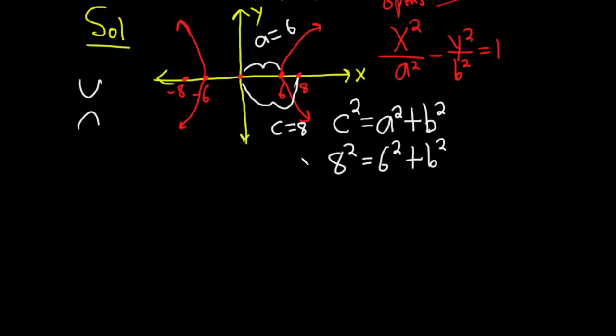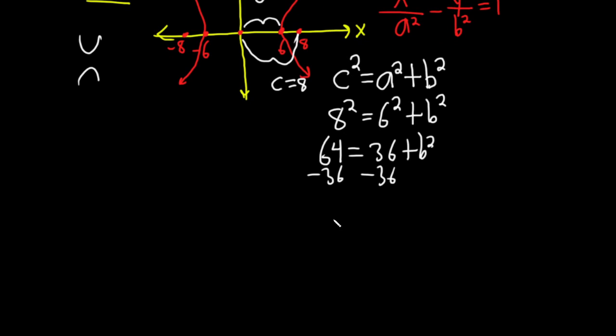So 8² is 64. And then 6² is 36 + b². Subtract 36. Subtract 36. That's going to be, I believe, 28 = b². All right. So we have b² = 28.